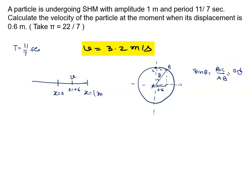Sin theta is given you perpendicular upon hypotenuse. This is 0.6, A is 1. So sin theta is known as 3 by 5. And we all know 3 by 5 means 37 degree.